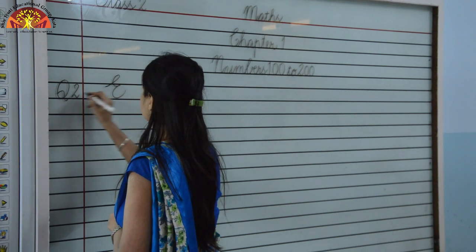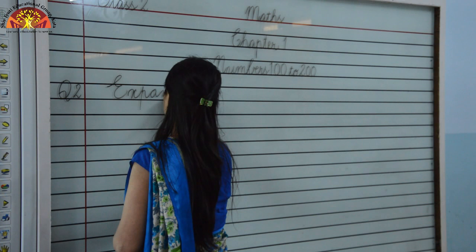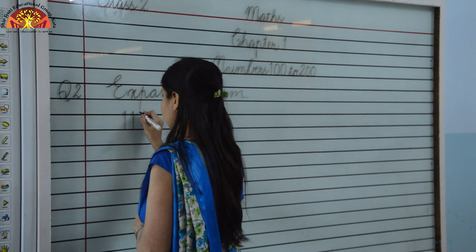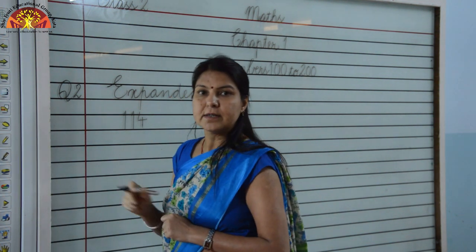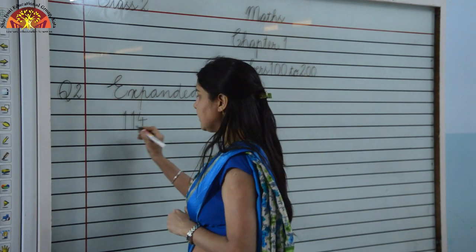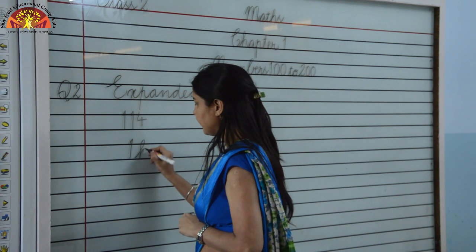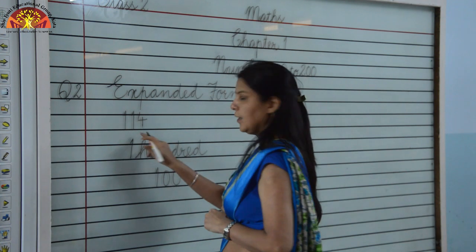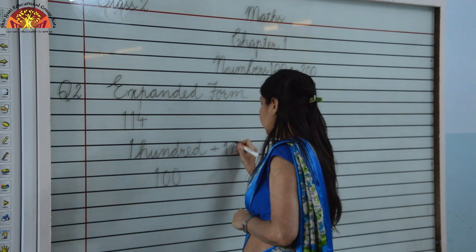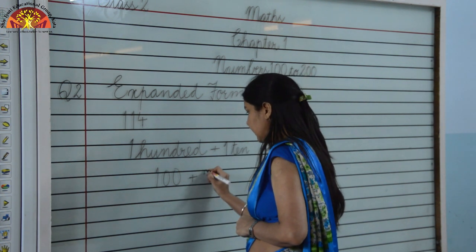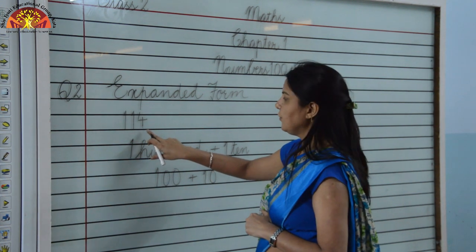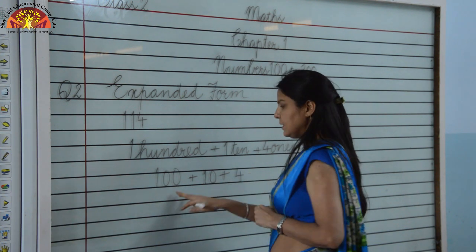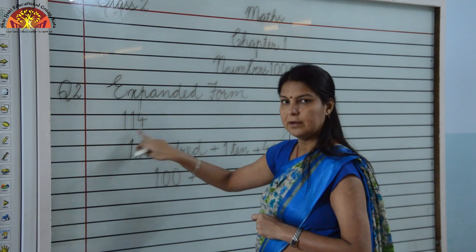You have to write the expanded form of 114. Expanded form is the sum of all place values of the given digits. So the place value of 1 is 100. The place value of the second 1 is 10. And the place value of 4 is 4 ones, meaning 4. So 100 plus 10 plus 4 — this is the expanded form of 114. I hope you have understood.